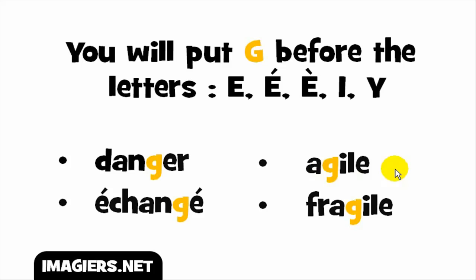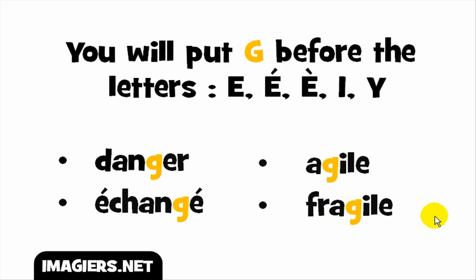For example: 'agile', 'agile'. And another example with the E sound vowel: G-I gives the J sound, as in 'fragile', 'fragile'.